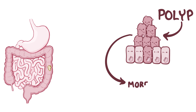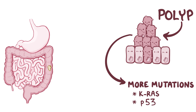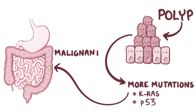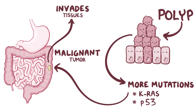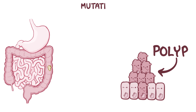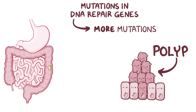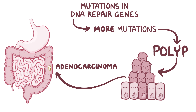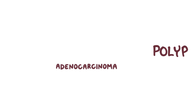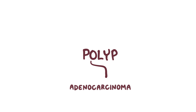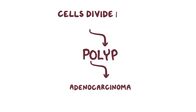Over time, these polyps might accumulate more mutations in other tumor suppressor genes, like the KRAS gene or the p53 gene, and ultimately might become a malignant tumor, meaning that the cells might be able to invade neighboring tissues. Another well-known example are genetic mutations in DNA repair genes, which help fix up mutations in cellular DNA. When they're out of action, cells accumulate mutations and over time can develop into polyps, and eventually adenocarcinomas. So broadly speaking, adenocarcinomas are the malignant evolution of polyps, and polyps arise when cells start dividing faster than usual.